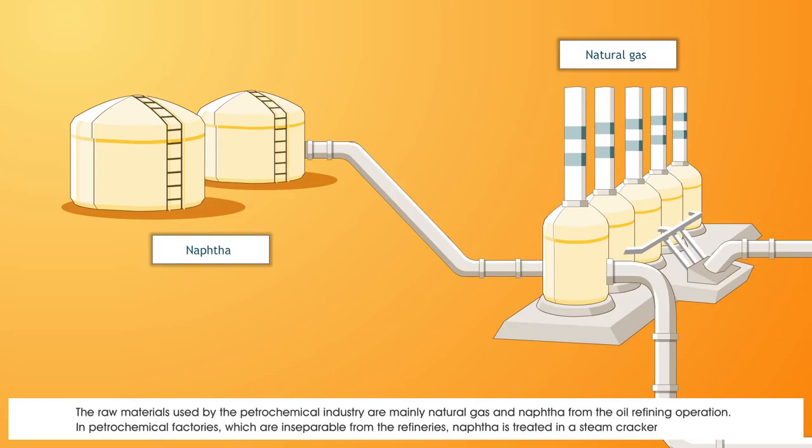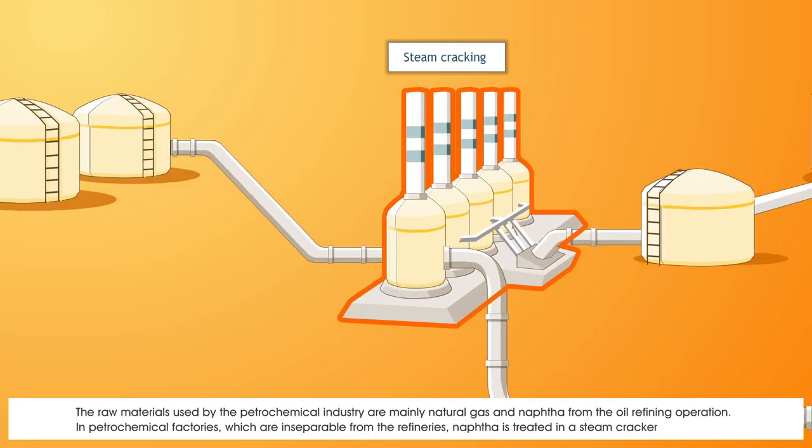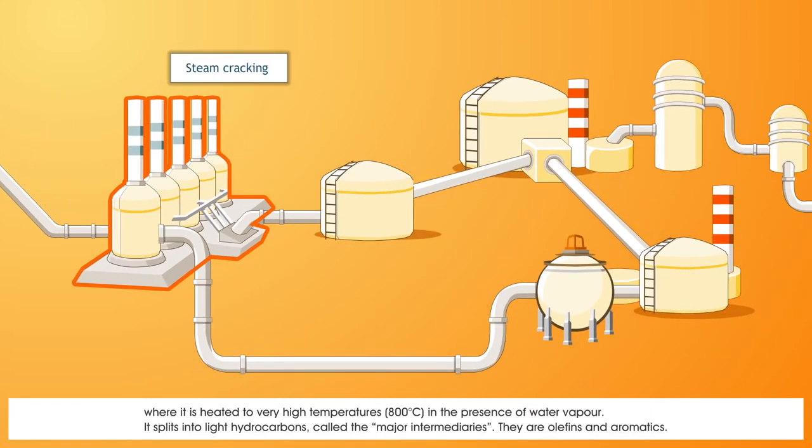The raw materials used by the petrochemical industry are mainly natural gas and naphtha from the oil refining operation. In petrochemical factories, which are inseparable from the refineries, naphtha is treated in a steam cracker, where it's heated to a very high temperature of 800 degrees Celsius in the presence of water vapour. It splits into light hydrocarbons, called the major intermediaries.